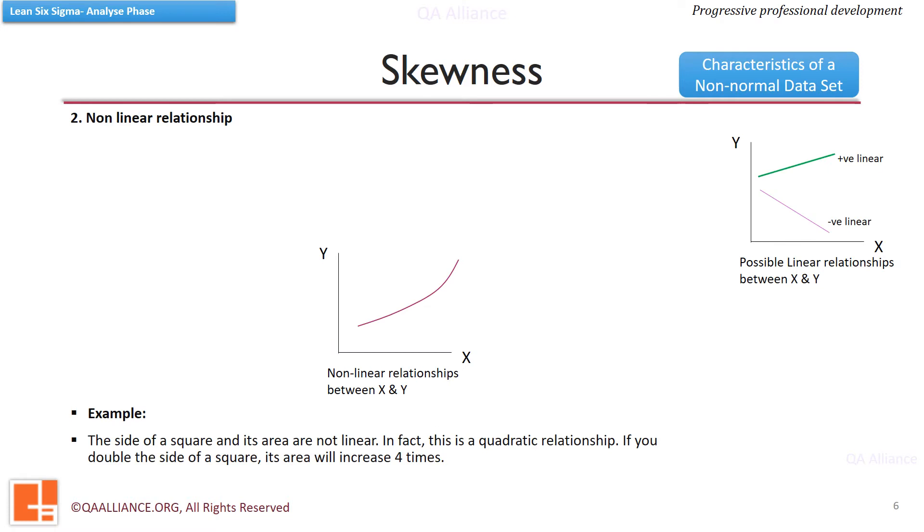Second reason can be the non-linear relationship. When the relationship between two variables is not linear and the slope is not constant, we can say that the data is skewed and not normal. This mostly occurs when there is very less or no relationship between x and y.